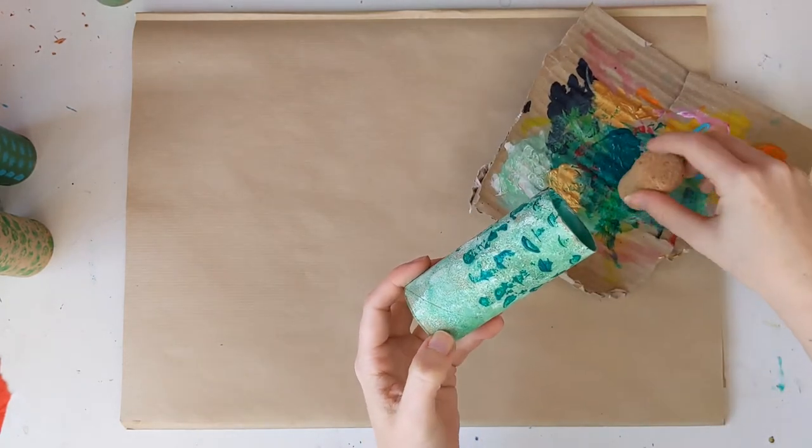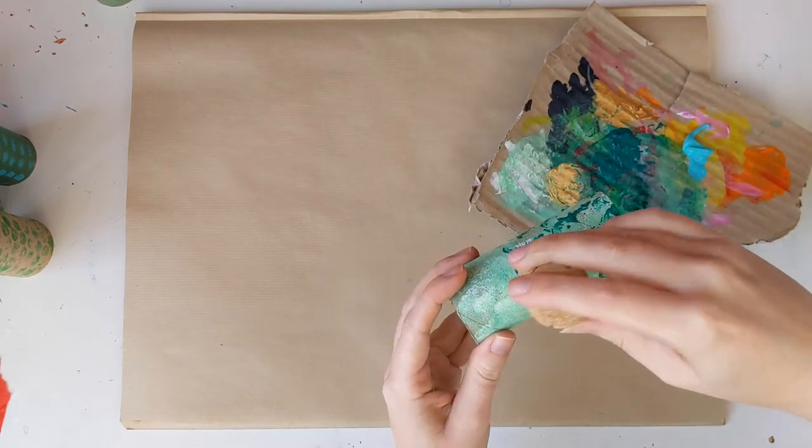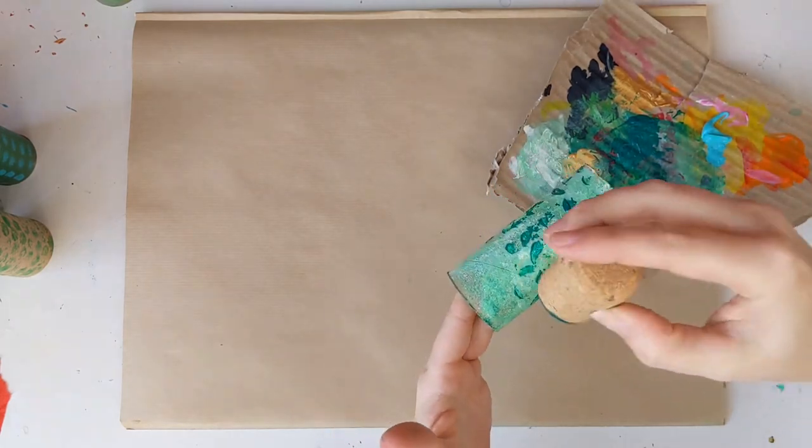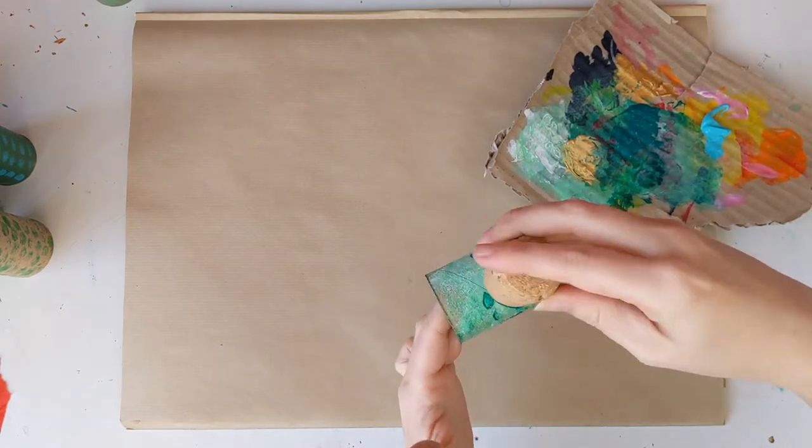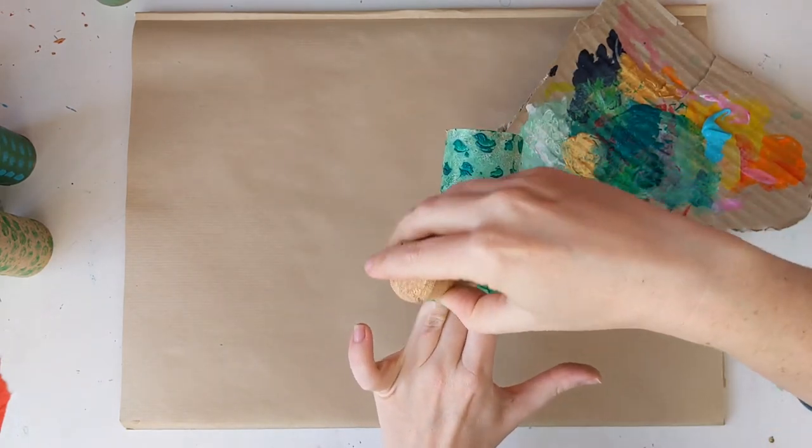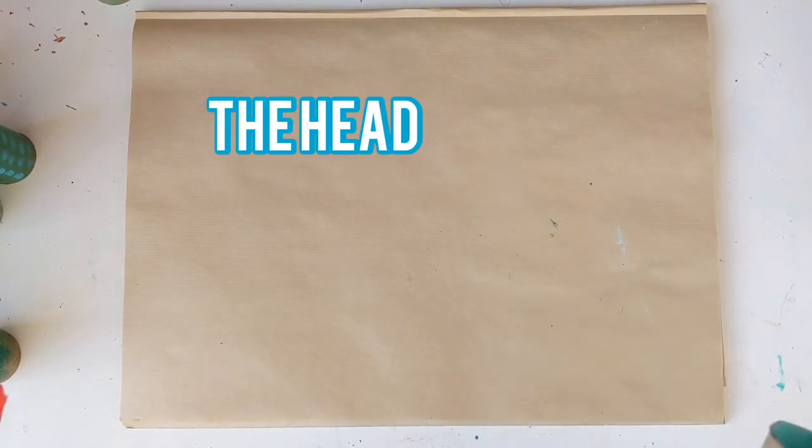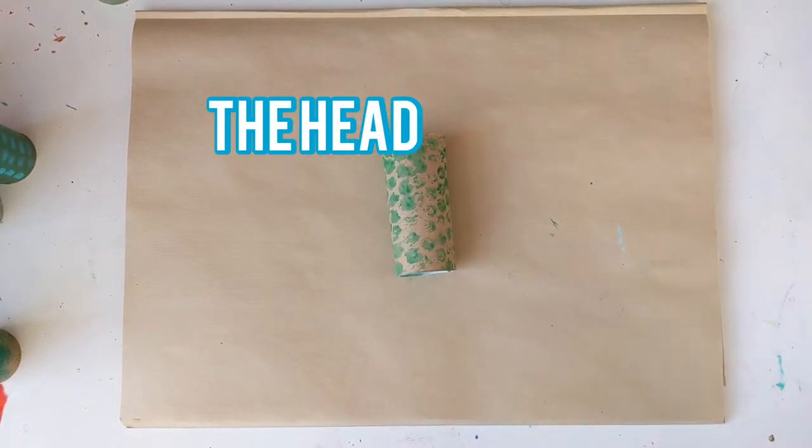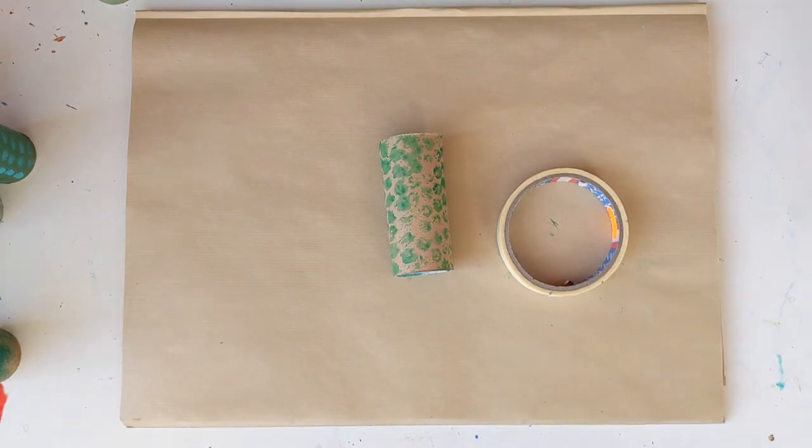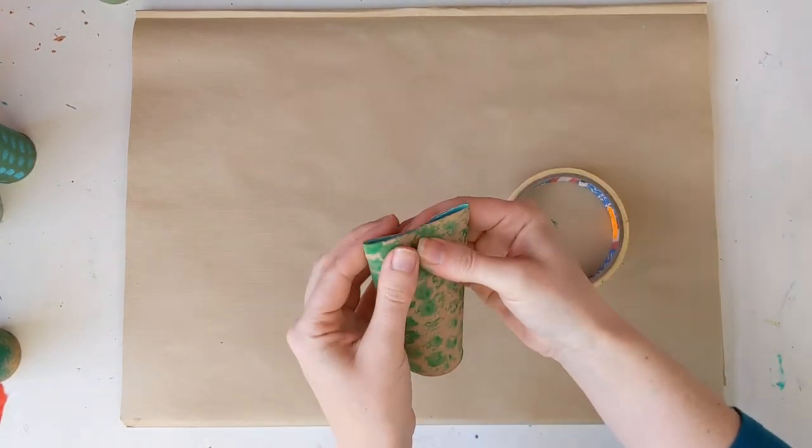Once you've painted all of your sections, however many you want and however you like, next will come making the head and also the tail. And then after we've made the head and the tail we will thread them together. I've chosen this toilet roll to make my head as I like the look of the patterns. I made this using the bubble wrap.